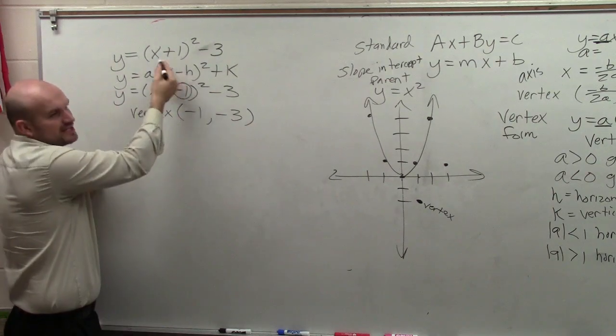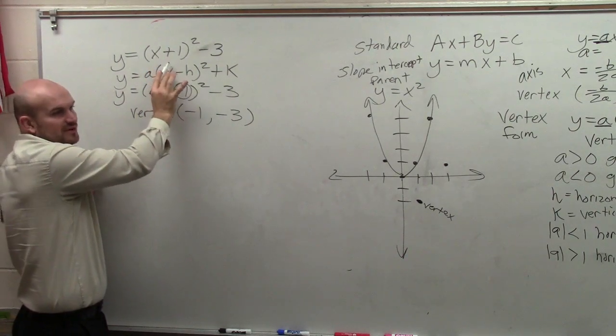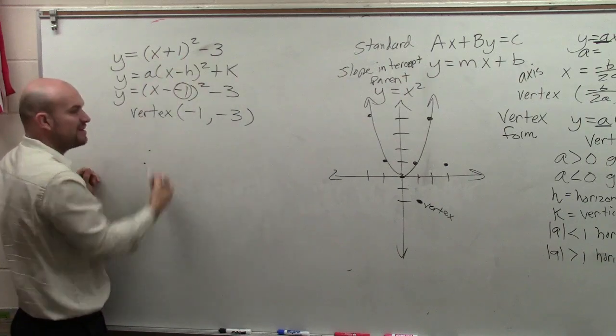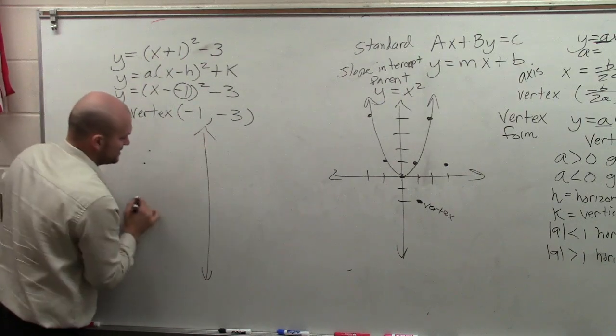Okay, once you guys get used to this, you can say, oh yeah, it's always the opposite of inside the parentheses. So that's negative 1, that's negative 3. There's my vertex. Cool. So now let's go and graph the vertex.